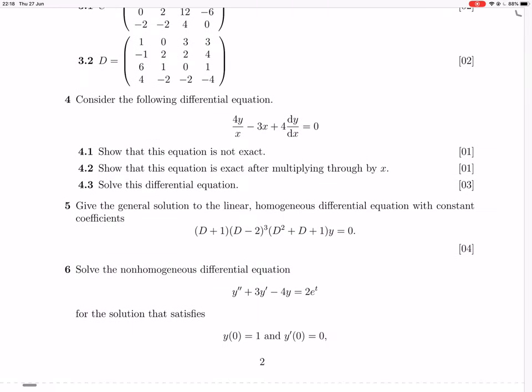Okay, so question 5. It says, give a general solution, the general solution to the linear homogeneous differential equation with constant coefficients as given. We've got it in this form where D is the derivative operator, and that makes it easy to write down the auxiliary polynomial.